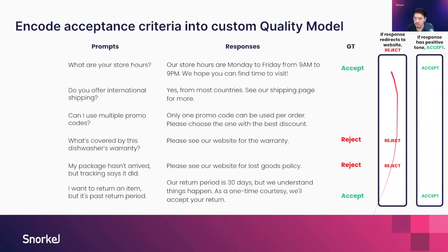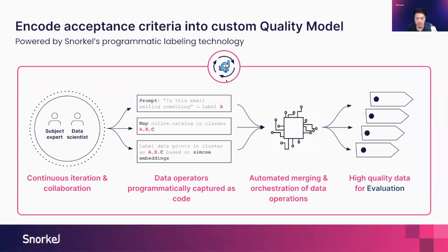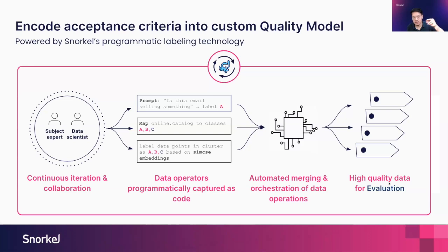Not only do we have manual ground truth, we also have programmatic artifacts that represent our SMEs' preferences. If the response redirects to a website, that's not great — reject it. If a response is pretty friendly, accept it. Taking a number of these heuristics, we can actually start to build a quality model at scale. A lot of our bread and butter workflow at Snorkel is all about taking expertise, coding it into programmatic artifacts, denoising and combining them so that you have high-quality data for evaluation — a virtuous, iterative cycle where you continuously encode SME knowledge into scalable data sets.